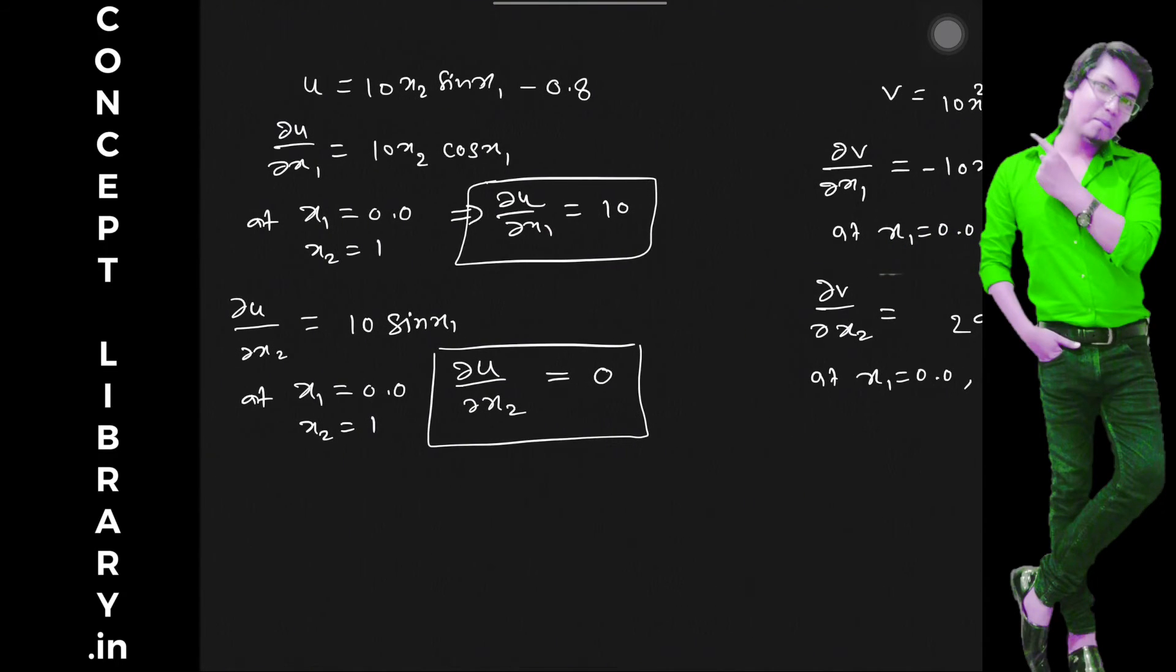So u is this. ∂u/∂x1 is 10x2 cos x1. When you differentiate this you will be getting this, and then substitute at x1 equal to 0 and x2 equal to 1, you will be getting 10.